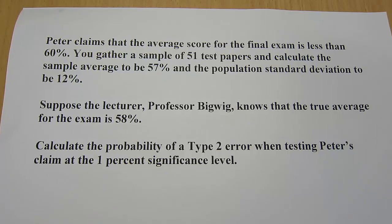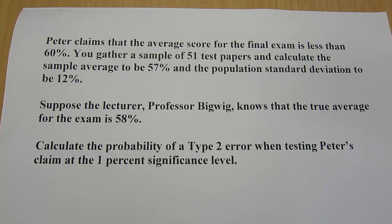The best way to teach this concept is by working through an example. Peter claims that the average score for the final exam is less than 60%. You gather a sample of 51 test papers and calculate the sample average to be 57%, and the population standard deviation to be 12%. Suppose a lecturer, Professor Bigwig, knows that the true average for the exam is 58%. Calculate the probability of a type 2 error when testing Peter's claim at the 1% significance level.